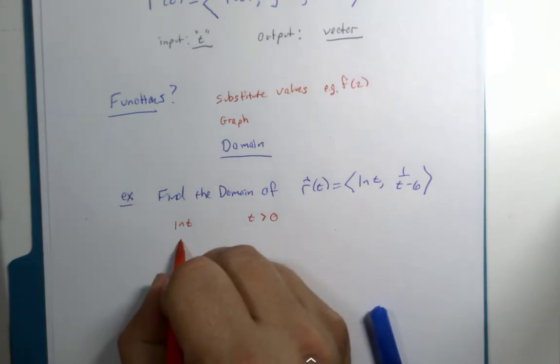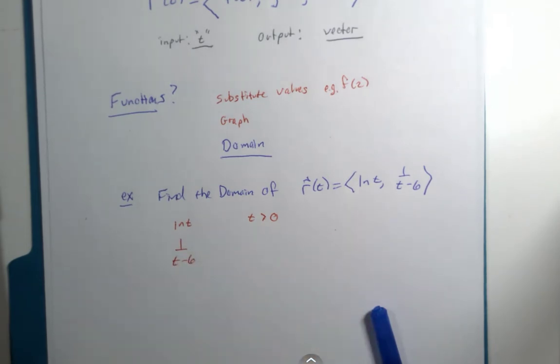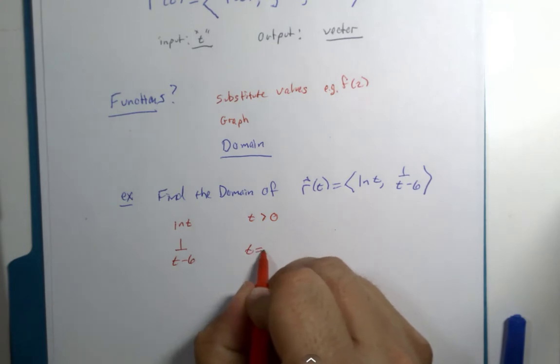And for one over t minus six, what do we know about that? That's right. T cannot equal six.